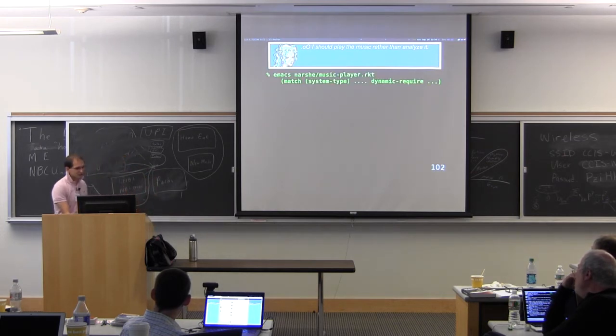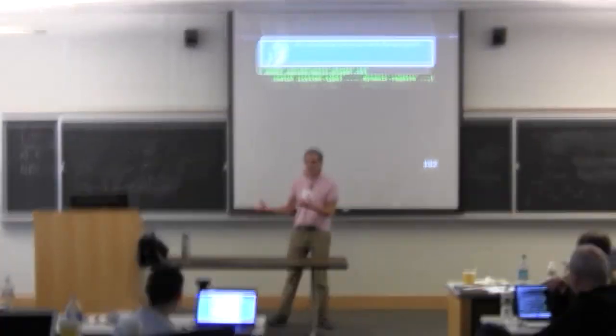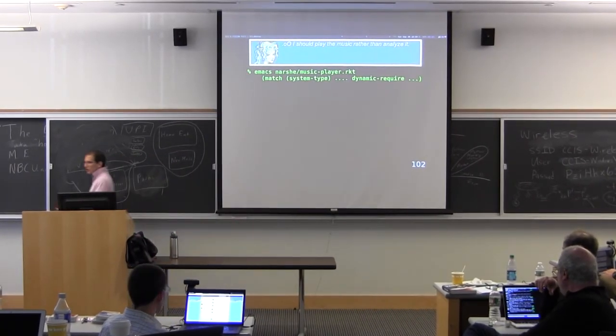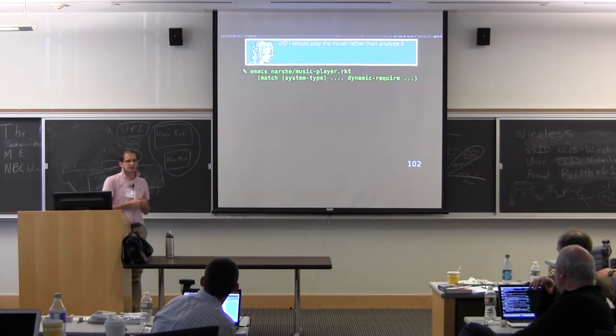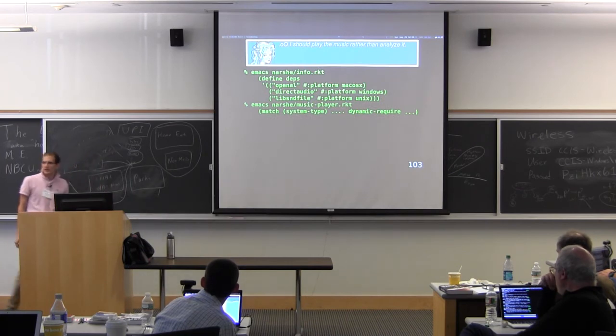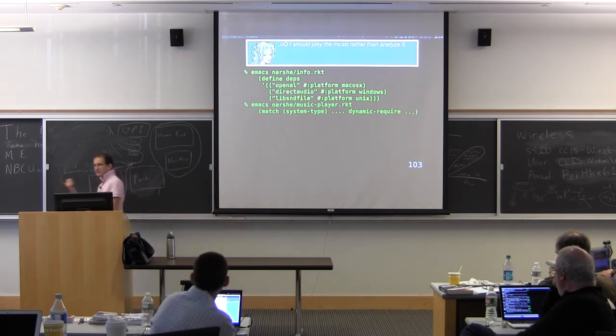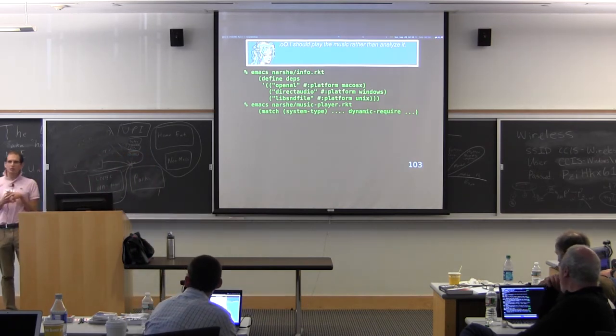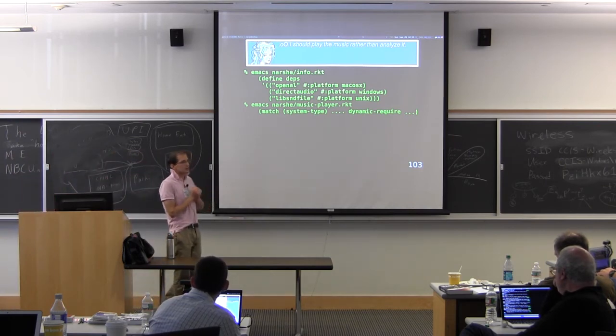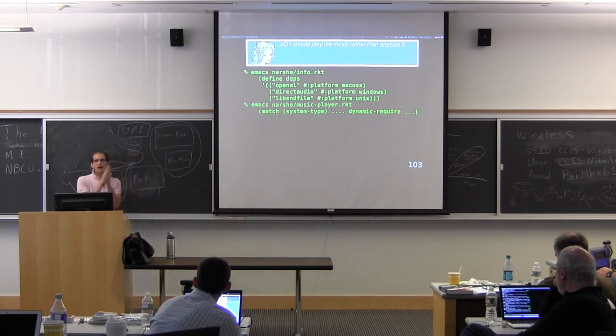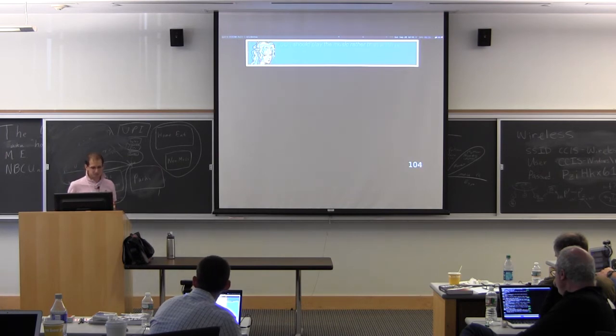So Tara decides that she needs to do something more. She wants to actually play the music, but playing the music is different on every system. So she has to write something that says, I'm going to look at what the system I'm on and then dynamically require a different module depending on the system. Now what that means is that she needs to update her dependencies to say, when I'm on Mac OS X, I need to use OpenAL. And when I'm on Windows, I need to use Direct Audio. So in the same way that dependencies can specify versions of the other package, dependencies can specify, when I'm on this platform, I require this particular package. This is one of the other ways that you can specify your dependencies.